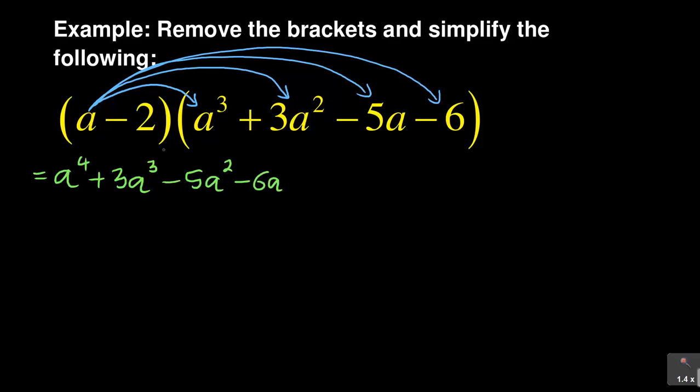That's the first part of the expansion. You do the same thing in the second part. It's -2 times a³, -2 times 3a², -2 times -5a, and -2 times -6. What you have then is -2 times a³ is -2a³. Now -2 times positive 3a², negative two times positive three is negative six, so it becomes -6a².